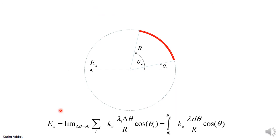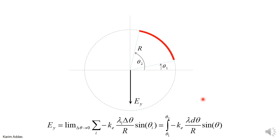Once you have this limit of sums, you can recognize that it can be written exactly as a definite integral. The minus sign, K_E, lambda, d theta, R, and cosine theta all correspond term by term from the sum to the integral. This definite integral gives exactly the same value as the limit of sums, and is much easier to solve — that's why we convert it. For the y-component, instead of cosine we have sine, giving another definite integral.